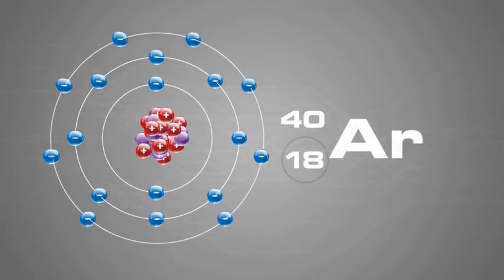Argon has 18 protons in its nucleus, and therefore 18 electrons. The nucleon number is 40. We know that there are 18 protons, and therefore there must be 22 neutrons.